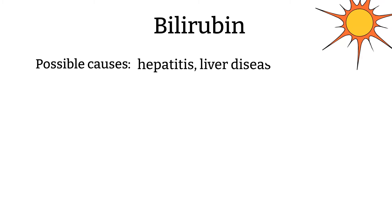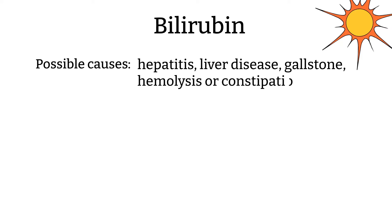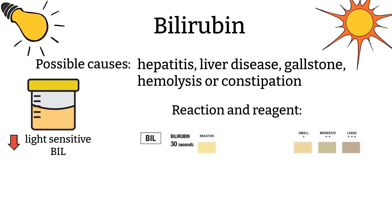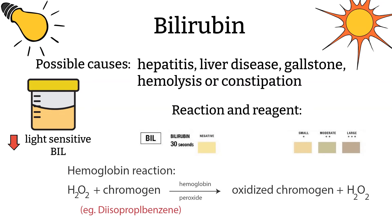Bilirubin. A small amount of bilirubin in urine is normal. However, an increased amount could indicate some serious health issues including hepatitis, liver disease, gallstone, hemolysis, and constipation. Bilirubin is light sensitive, so the urine should be tested as soon as possible and protected from light after collection. The pad for the urine test reads between 30 to 60 seconds after dipping. The chemical pad color changes from light yellow to tan, which correspond to the level of bilirubin from negative to a large amount. Here are the reactions and reagents.